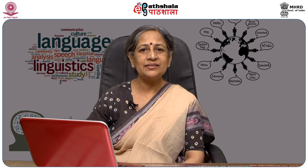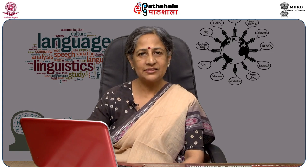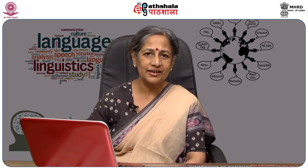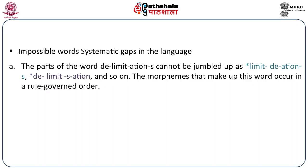If you violate the rules of how to compose morphemes into a word, you get ill-formed words. Words which cannot exist are called systematic gaps in the lexicon. So we have accidental gaps — words that can exist but do not because we don't need them — and we have systematic gaps in the lexicon — words which cannot possibly exist in a language. We talked about 'delimitations' and said that the word has these morphemes: 'de', 'limit', '-ation', and '-s'.